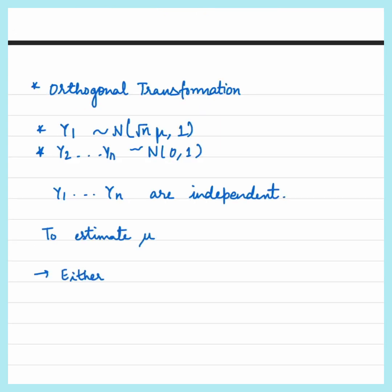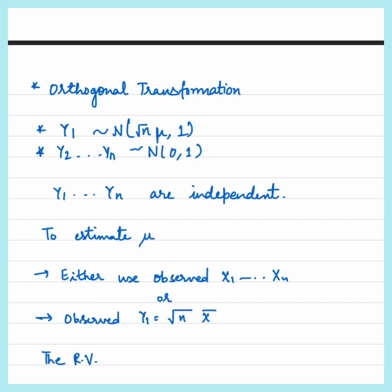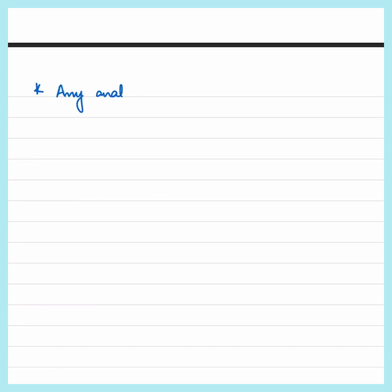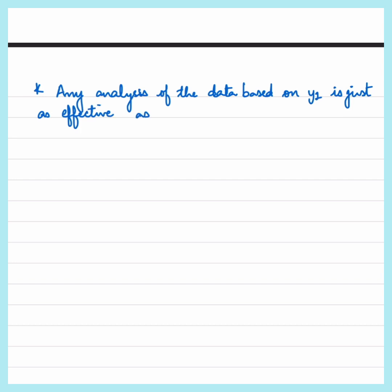To estimate mu, we can either use the observed values of x1, x2, ..., xn or simply the observed value of y1 = sqrt(n) * x-bar. The random variables y2, y3, ..., yn provide no information about mu. Clearly y1 is preferable, since we do not need to keep a record of all the observations, and any analysis of the data based on y1 is just as effective as any analysis based on the full x sample.